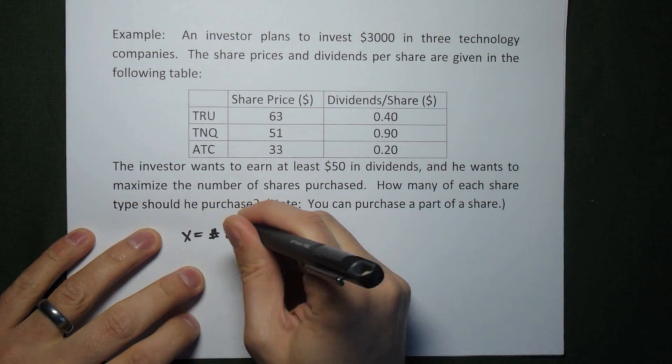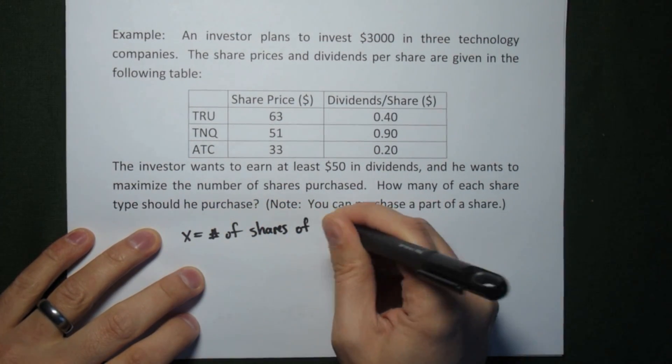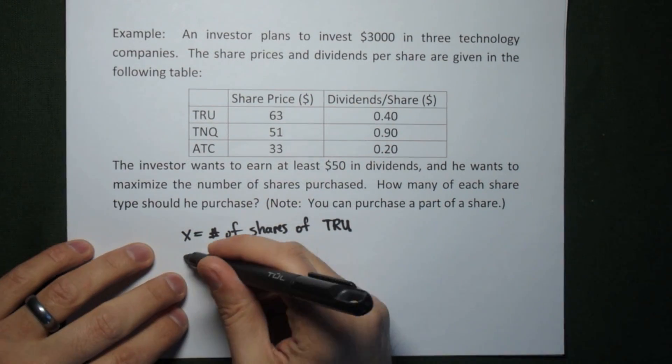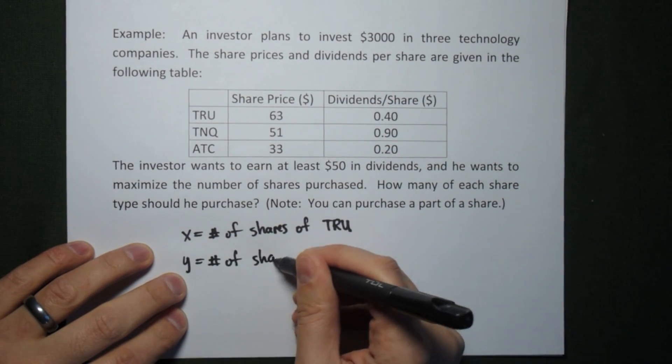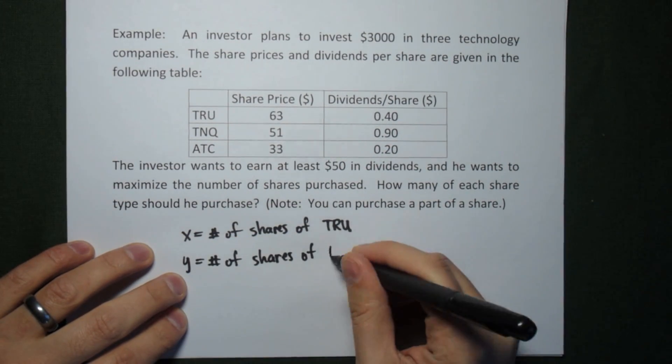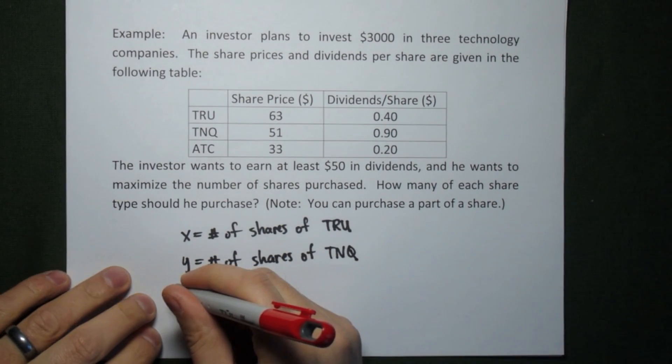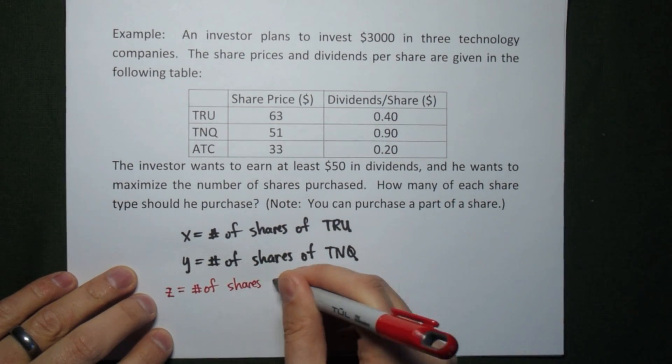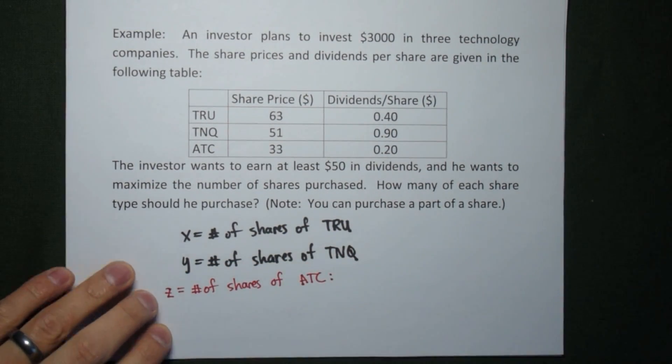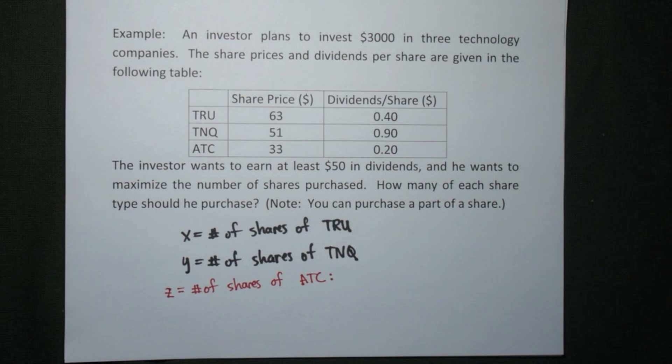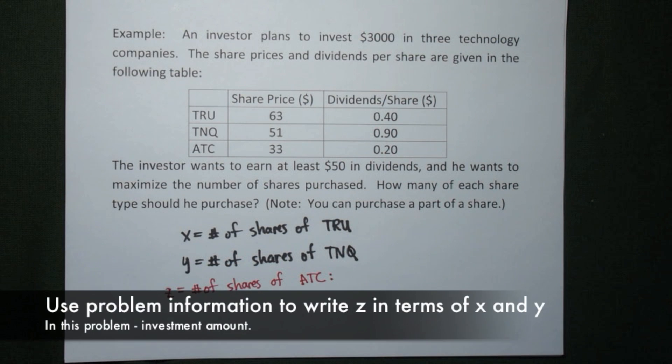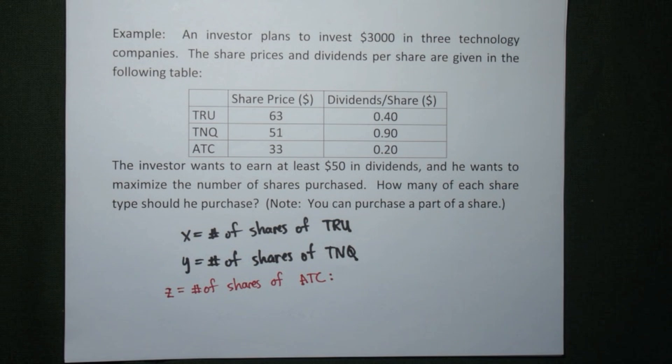To assign the variables for this type of problem, we're going to look at our freedom, and our freedom is in the number of shares we can buy. And so, x is the number of shares of TRU, y is the number of shares of TNQ, and this is where we run into a problem. We want to let z be the number of shares of ATC. However, we can't solve a problem with three variables. Therefore, we have to use the problem information to take the z variable and write it in terms of x's and y's.